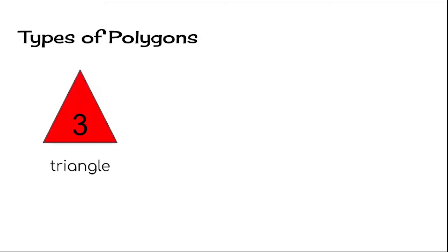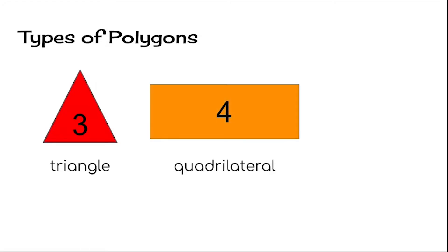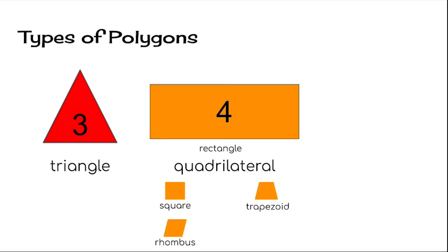Now, there are lots of types of polygons. We're going to learn the names of some of them — just up to 10 sides. A three-sided polygon is a triangle. A four-sided figure we're going to call a quadrilateral. A rectangle is just one type of quadrilateral. There are a bunch of others too — a square is a quadrilateral, and so is a rhombus. Squares and rhombuses have all four sides equal. A trapezoid is a special kind of quadrilateral with only one pair of parallel sides. And a parallelogram is a word for quadrilaterals that have two sets of parallel sides. Rectangles, squares, and rhombuses are also parallelograms. So that's why we're just going to use the word quadrilateral today.